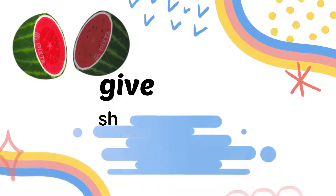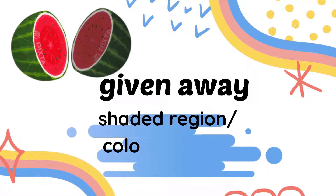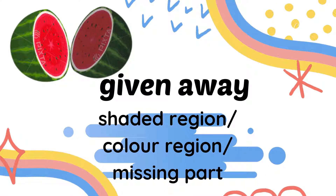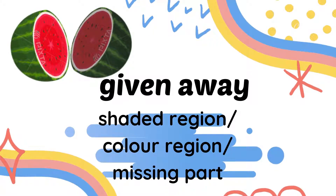Next, the word 'given away'. In this question, the word 'given away' indicates the meaning of shaded region, colored region, or missing part. In this case, the given away is one part of the watermelon — one part of the watermelon is given away to the neighbor.